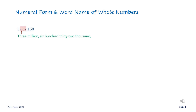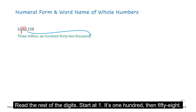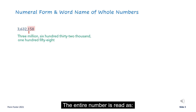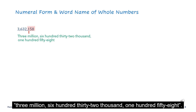Put a comma, then read the rest of the digits. Start at one: it's one hundred, then fifty-eight. The entire number is read as 3,632,158.